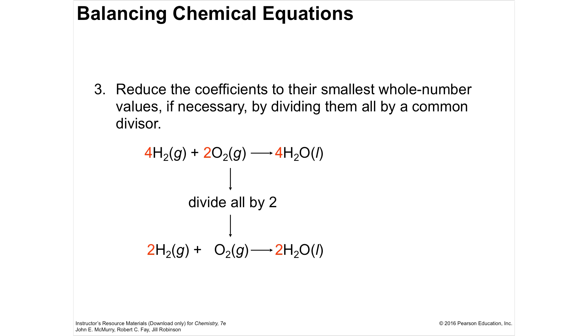Well, if every single coefficient is divisible by two, this first one cannot be correct because they're always going to be in the smallest, lowest whole number ratios that there can be. So if four, two, and four are all divisible by two, divide by two, you'll end up with two, one, and two.